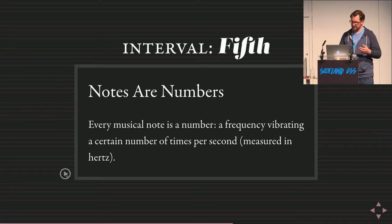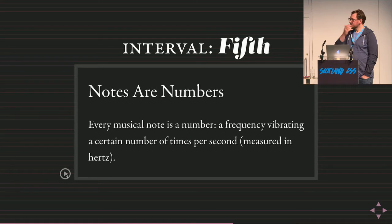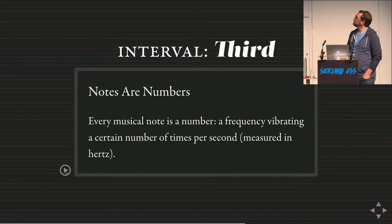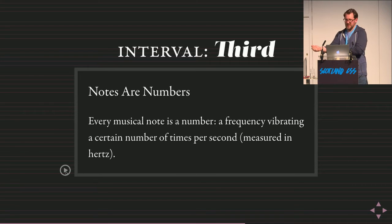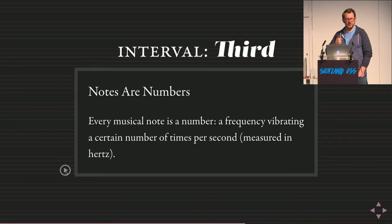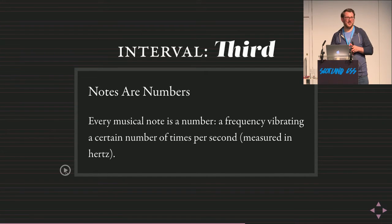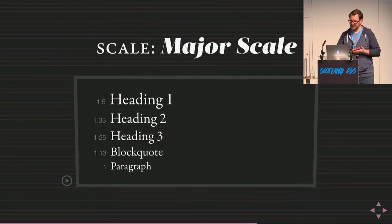Let's try a smaller interval: a major third. [music plays] The major third is much closer to the original pitch — the frequency ratio is approximately 1.25. Here's a heading that proportion away from the body copy. So that's individual intervals — but can these create actual systems of typography useful in real life? I think so.